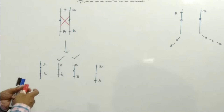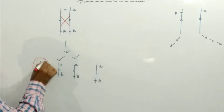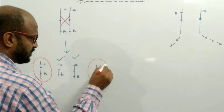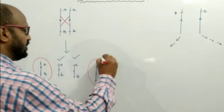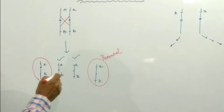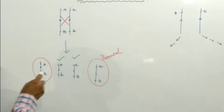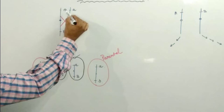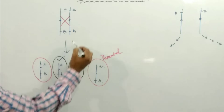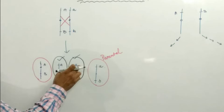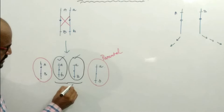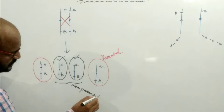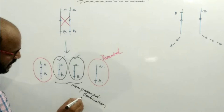The gametes or progeny having the parental character are called parental gametes. The gametes or progeny having a non-parental combination — capital A and small b, or small a and capital B — these are known as recombinants. So the parental combinations are A-B and a-b, while the non-parental combinations are A-b and a-B.